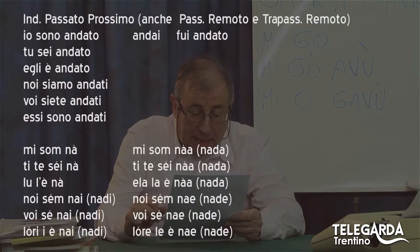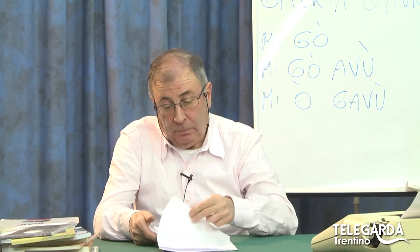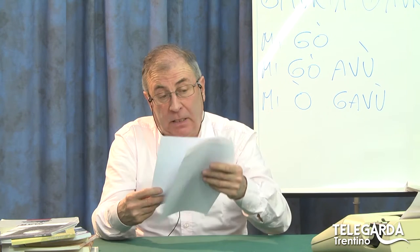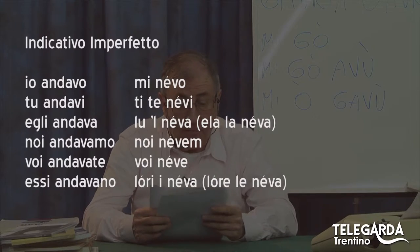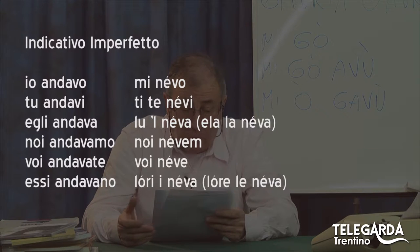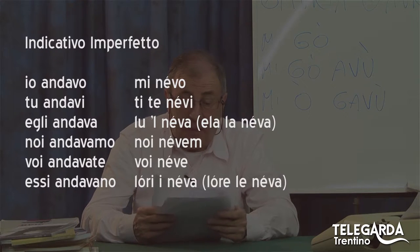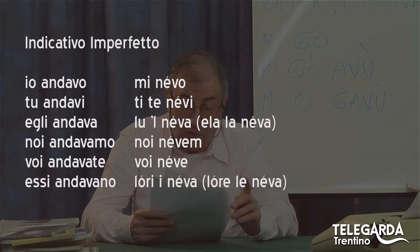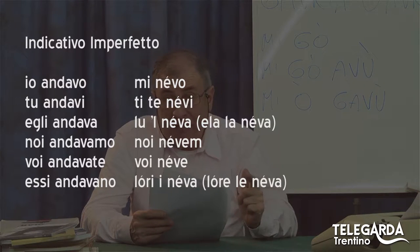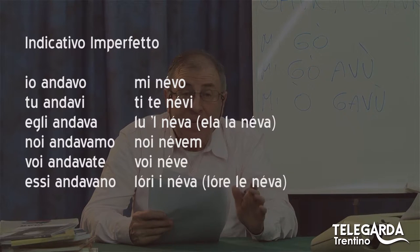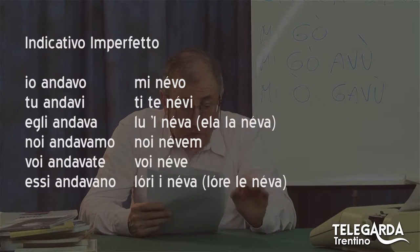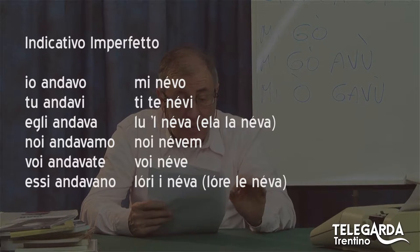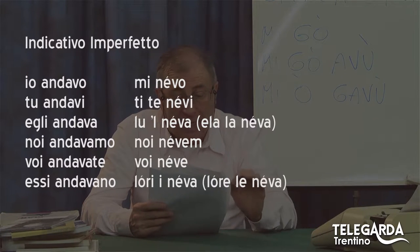Adesso andiamo ad un altro tempo, sempre siamo nel modo indicativo. Siamo all'imperfetto: io andavo, tu andavi, e li andava. E diventa: mi nevo, ti tenevi — mi raccomando gli accenti fonici chiusi — lul neva o ela la neva per il femminile, noi nevem, voi neve, lori i neva o lore le neva.